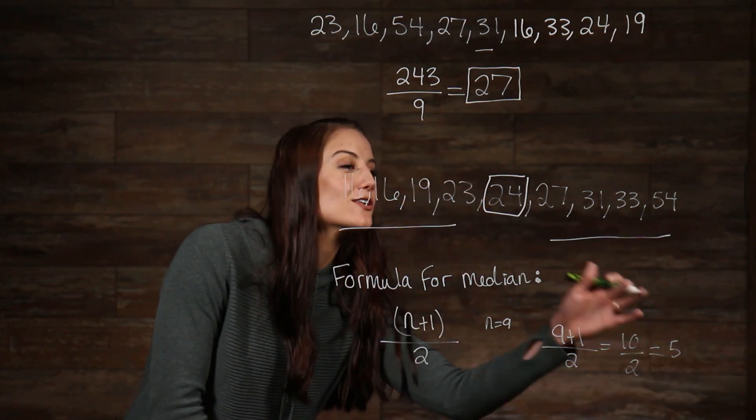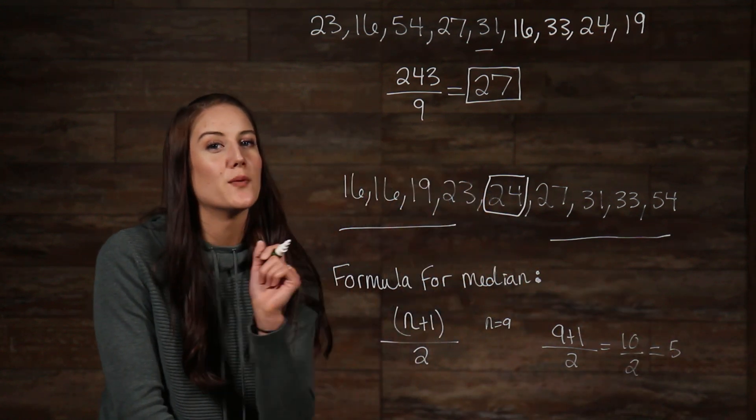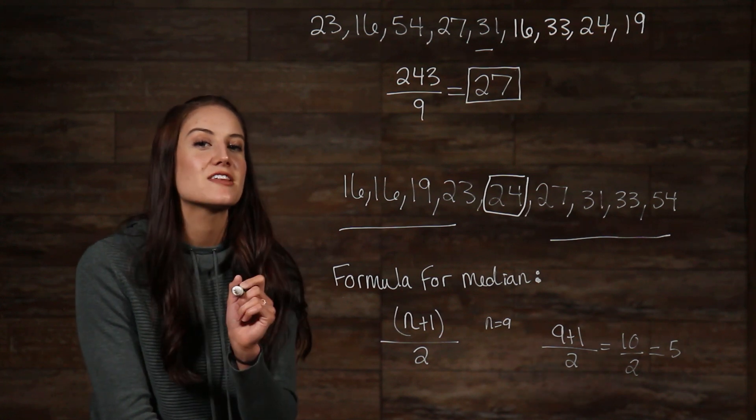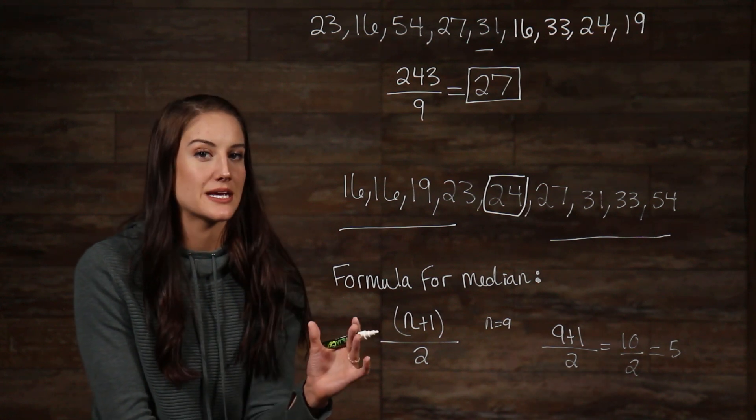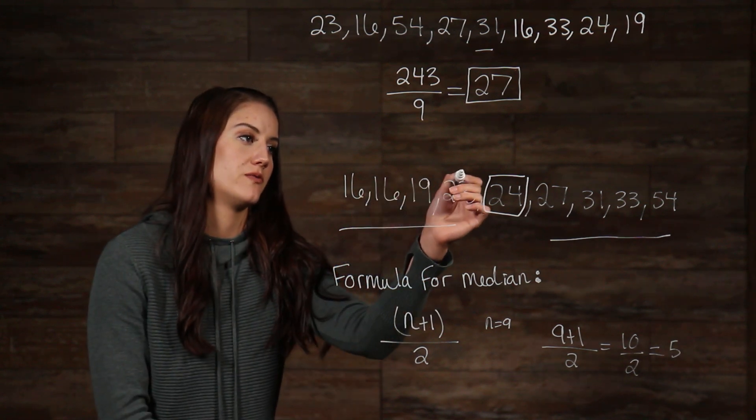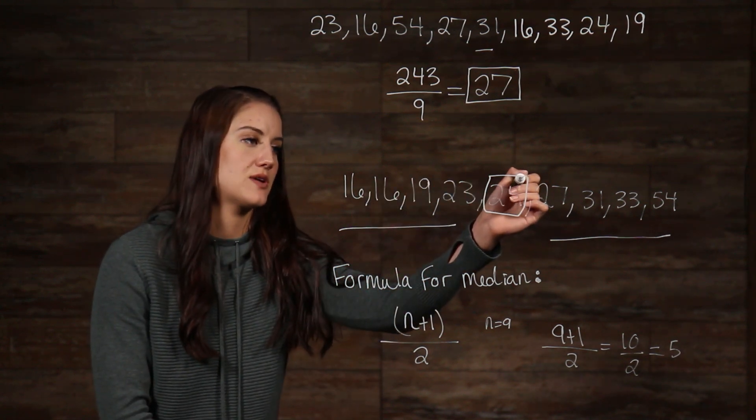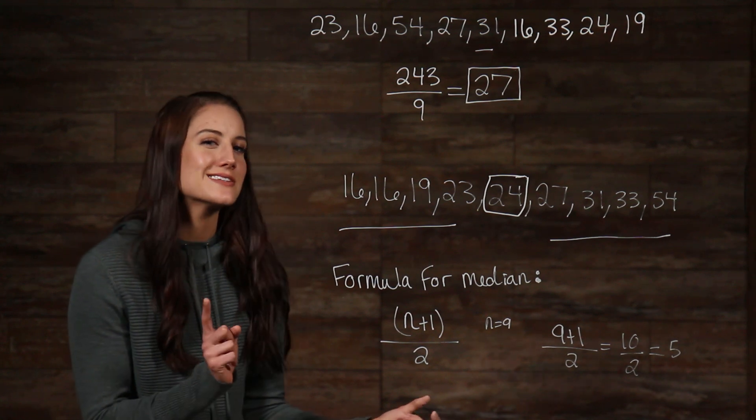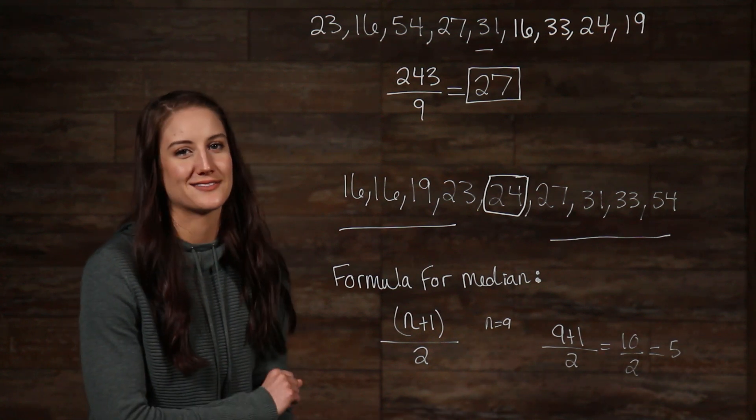So, 5 is clearly not 24, but what 5 is telling us is that the fifth number in the list is our median, which we can see by looking on this list, 1, 2, 3, 4, 5, and that is correct. So, as you can see, finding the median is relatively simple.